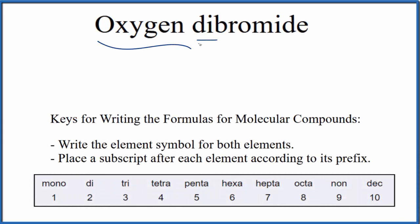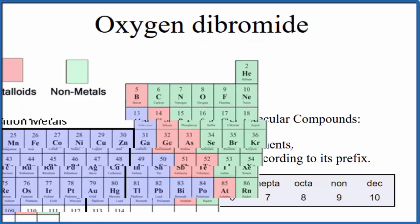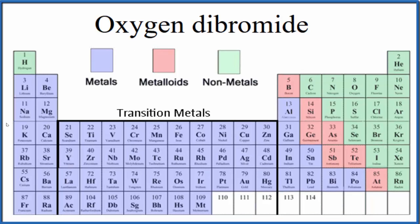To write the formula for oxygen dibromide, let's first look at what type of compound we have. If we look at the periodic table divided into metals, nonmetals, and metalloids...